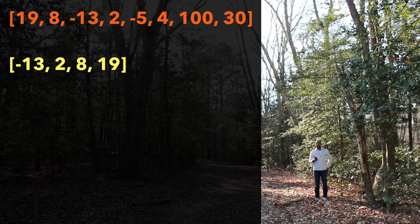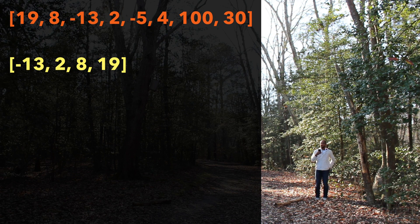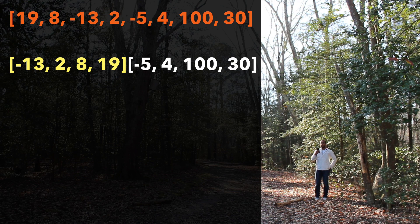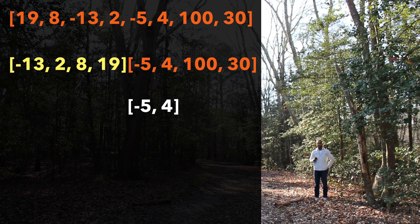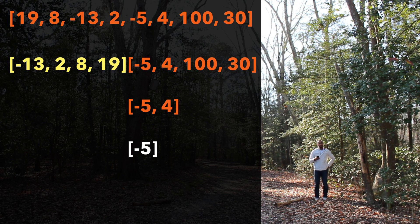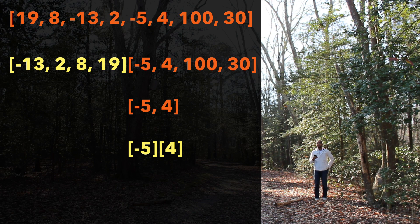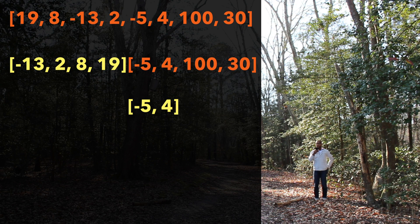Negative 13, 2, 8, 19 is the sorted left portion of the overarching call for 19, 8, negative 13, 2, negative 5, 4, 130. Now at the very top of our call we go to the right and need to sort negative 5, 4, 130. We go left and sort negative 5 and 4. We go left to negative 5 — that's sorted, return. Then right to 4 — that's sorted, return. We merge those two into the sorted array negative 5, 4.